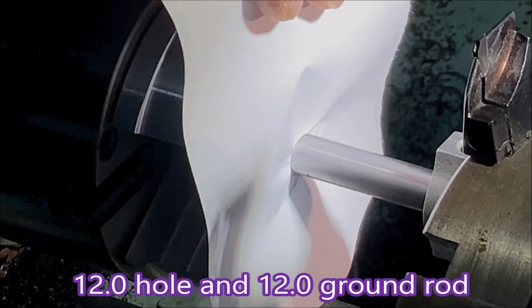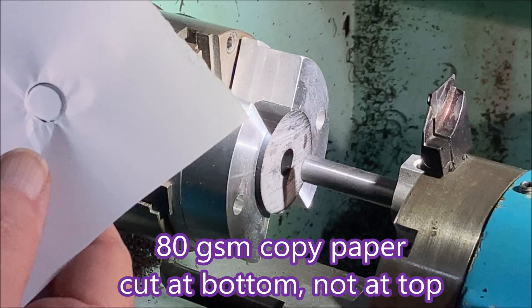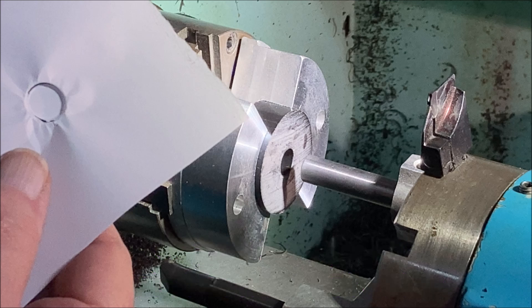Now you just push the rod into the hole and then check where the clearance is. It'll be cut where it's too tight and not cut where it's too loose. When I was an apprentice, this is the way we used to check the clearance between a punch and die.